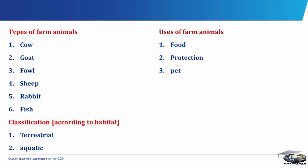Land management. The grazing of livestock is sometimes used as a way to control weeds and undergrowth. For example, in areas prone to wildfires, goats and sheep are set to graze on dry scrub, which removes combustible material and reduces the risk of fires. Some farm animals can also be used as pets in homes.